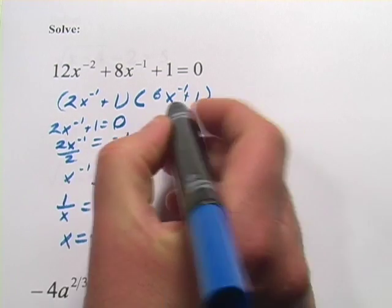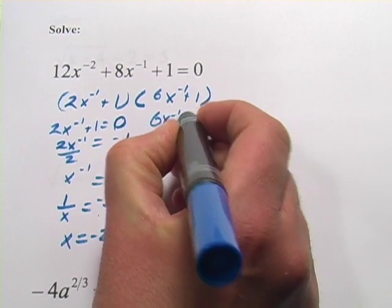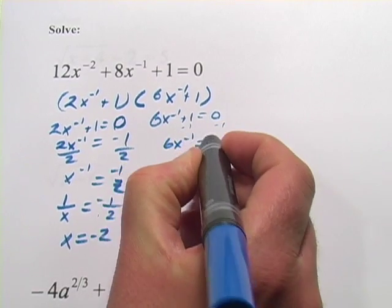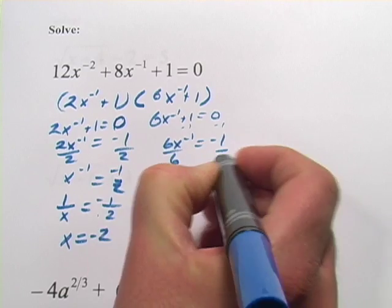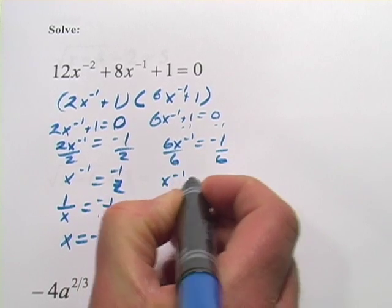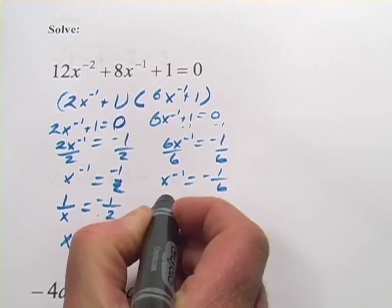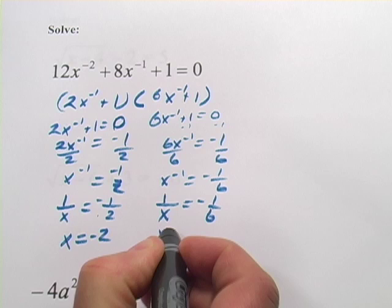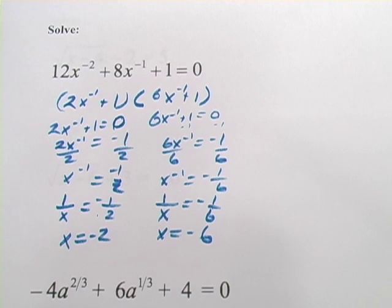Let's try this other factor. I'd do the same thing. 6x to the negative 1 plus 1 equals 0. Subtract 1 from both sides. 6x to the negative 1 equals negative 1, divide by 6. x to the negative 1 equals negative 1 sixth. That is the same as 1 over x equals negative 1 sixth, and x equals negative 6.